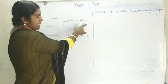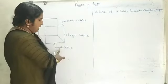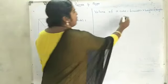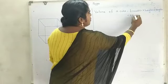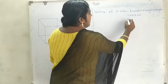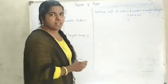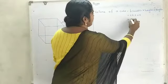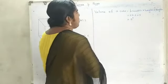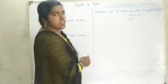Breadth means side S, height is S, and length is also S. Therefore, S into S into S — and S into S into S means S cube. So the volume of a cube is equal to S cube.